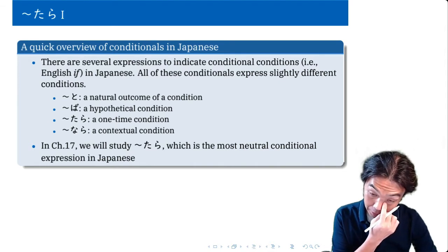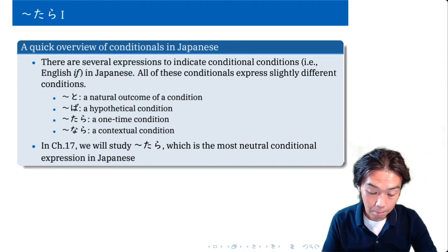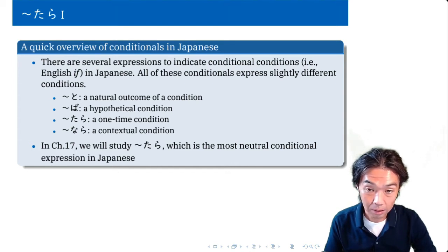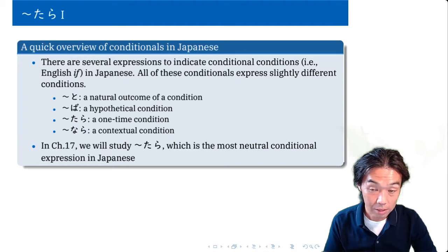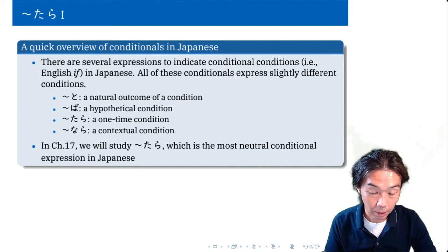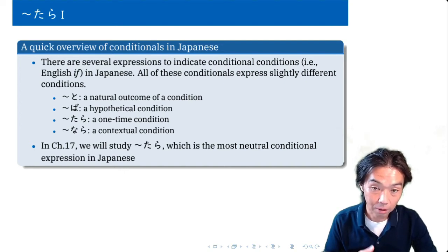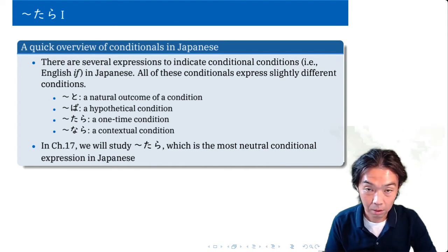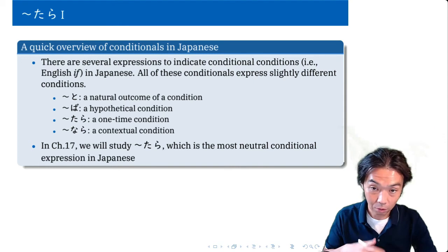Tara is one of the four major conditionals in Japanese. By conditionals, I mean something similar to English if. So if something, on certain condition, something happens. Like in English, English also has several different kinds of conditionals like if, when, whenever, and there are quite a few more.